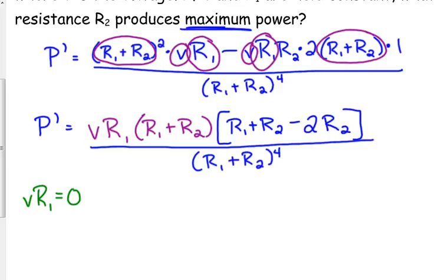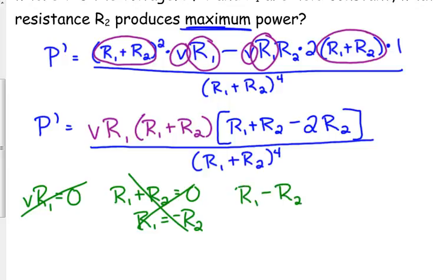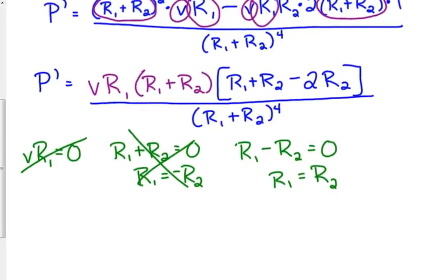Well, V and R sub 1 are constants. Those aren't going to equal 0. R sub 1 plus R sub 2 is equal to 0. That says R sub 1 is equal to negative R sub 2. Resistors never have negative value, so that doesn't give us anything. And then our other piece, we get R sub 1 minus R sub 2 when we combine those like terms. So that says R sub 1 equals R sub 2.